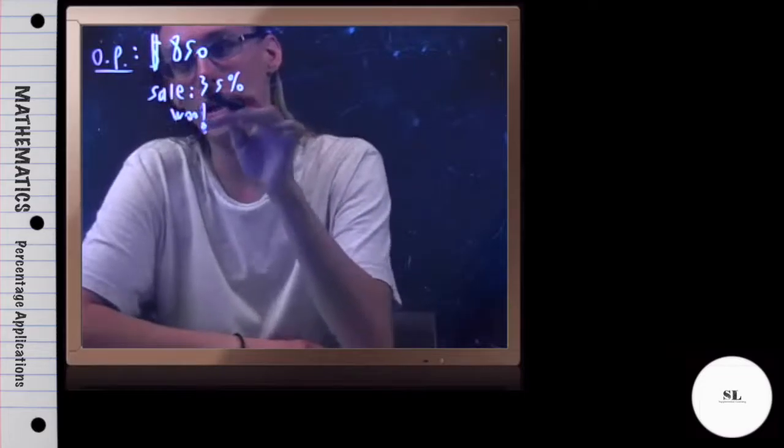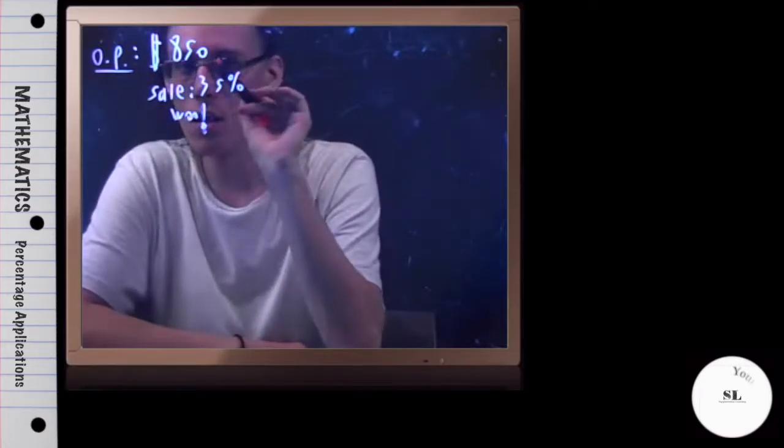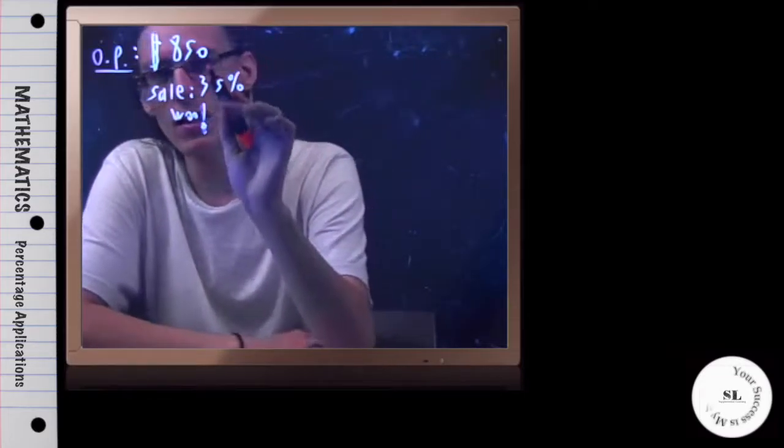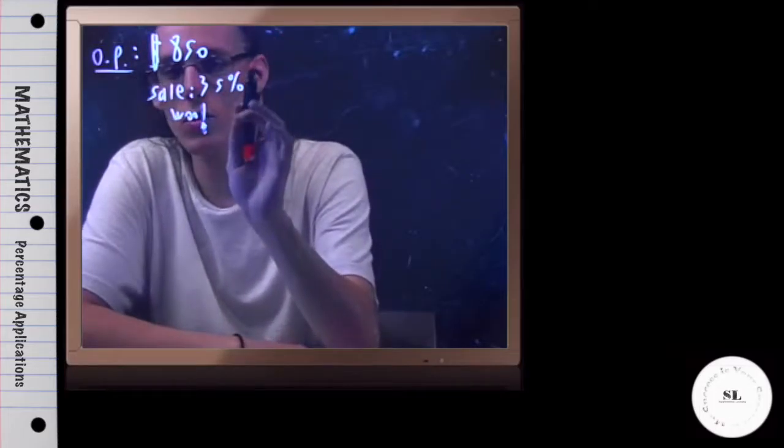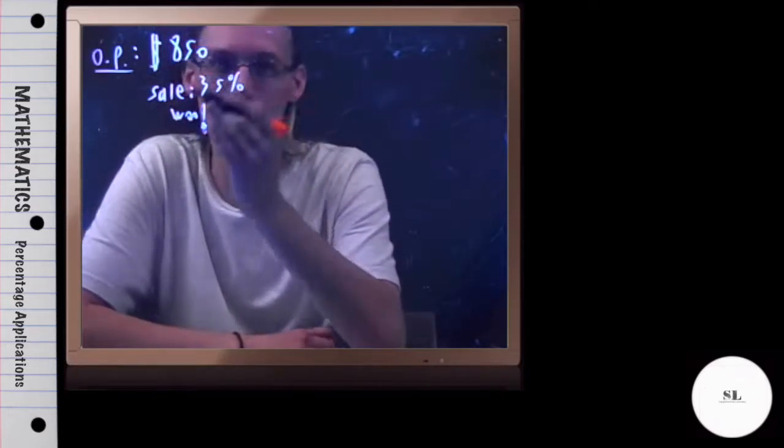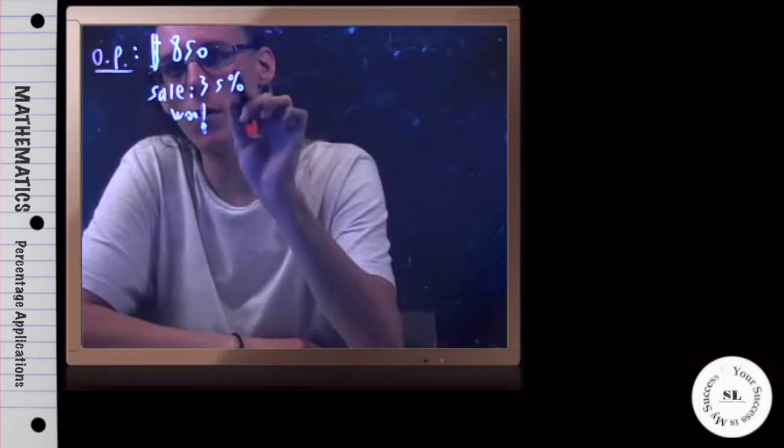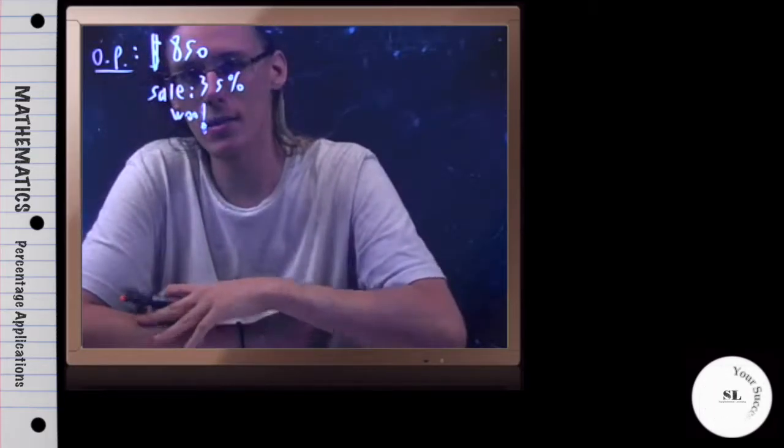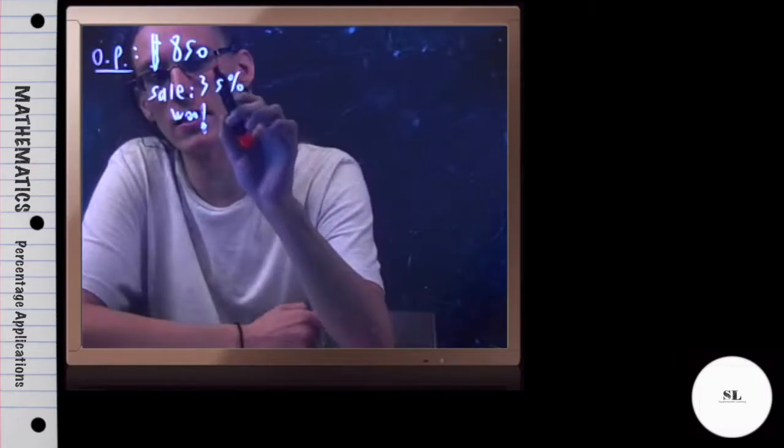In other words, how much is going to be taken off of the TV here? Well, recall that to get a percentage of a number, all you do is take the given sales rate or the percentage or the sales tax, whatever it is, and multiply it by the original price. But you have to do this with this as a decimal number.